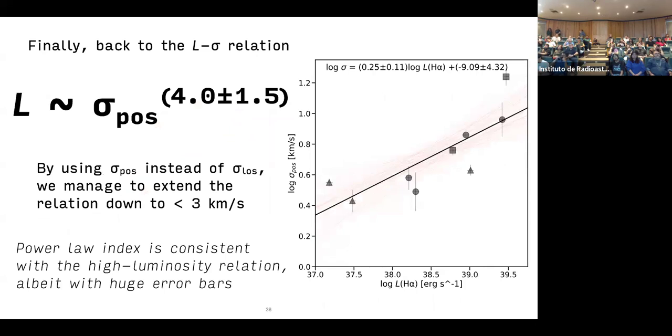Finally, get back to the L sigma relation. In our sample, we do indeed recover this relationship. We actually see the same relationship, although it is a very similar slope. It joins up precisely with that seen in more luminous regions. We extend it down to as low as three to one to the second region, the lowest luminosity regions.